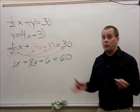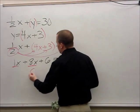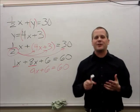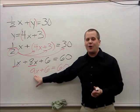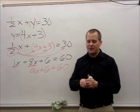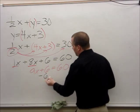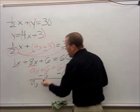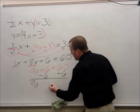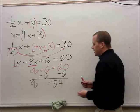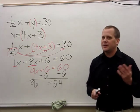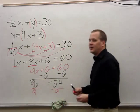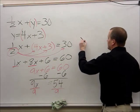Now I combine like terms: 1x plus 8x is 9x, plus 6 equals 60. I want to isolate the variable — get x all by itself. There's a positive 6 after 9x, so I subtract 6 from both sides. Positive 6 take away 6 is 0; those cancel out. Sixty take away 6 is 54. Now I divide both sides by 9: 9 divided by 9 cancels out, leaving x equals 54 divided by 9.